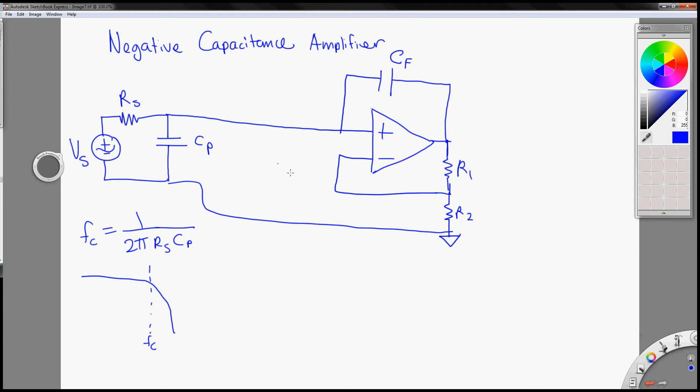So how do you derive an equation that can relate the value C feedback, Cf, to that Cp, so that you can cancel out this current here called Ip.